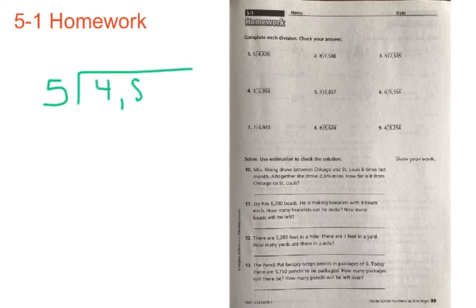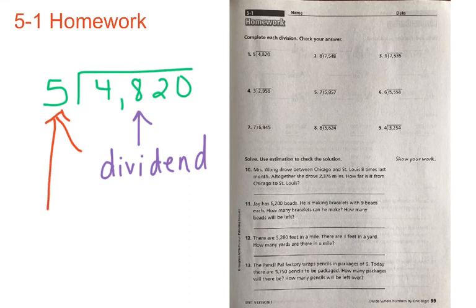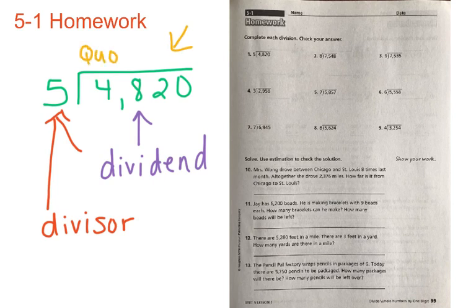We have 5 into 4,820, or 4,820 divided by 5. Before we get started, I'm going to quickly review our division vocabulary. This number here that is being broken into parts — that is the dividend, D-I-V-I-D-E-N-D — the number being broken up into equal parts. In this case it's being broken into 5 equal parts. The 5 that you're dividing by is the divisor, D-I-V-I-S-O-R. And your answer is called your quotient, Q-U-O-T-I-E-N-T. I just wanted to give you a quick refresher of our vocabulary terms when completing division problems.